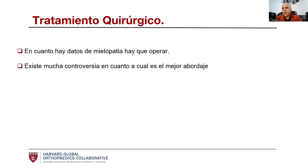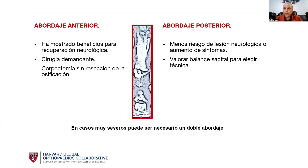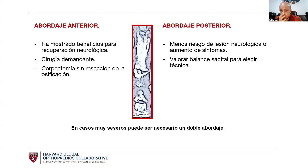El tratamiento quirúrgico se recomienda cuando hay datos de mielopatía: siempre que empieza la cuestión neurológica y sobre todo motora, se recomienda no esperar. La controversia está en cuál es el mejor abordaje. Tenemos una estructura que puede liberarse por dos vías, tanto anterior como posterior. El abordaje anterior ha mostrado beneficios para una recuperación neurológica; es una cirugía más demandante, pero si está indicada, habrá que hacerla. Lo que se recomienda es una corpectomía sin resección de la osificación.